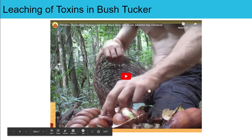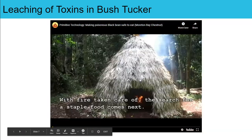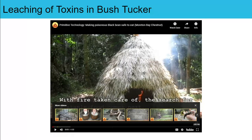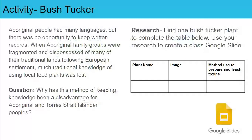A YouTube video is linked on your Google Classroom — it goes for four minutes so make sure you give yourself time to watch it. The activity I want you to undertake is to answer the question: why has this method of keeping knowledge been a disadvantage for Aboriginal and Torres Strait Islander people? Aboriginal family groups spoke many languages and didn't often keep written records. Because families became fragmented and dispossessed of their traditional lands, much of the traditional knowledge of local food plants was lost. Why has not being able to write it down been a disadvantage?